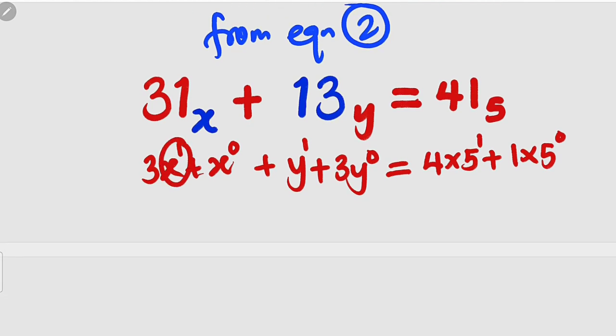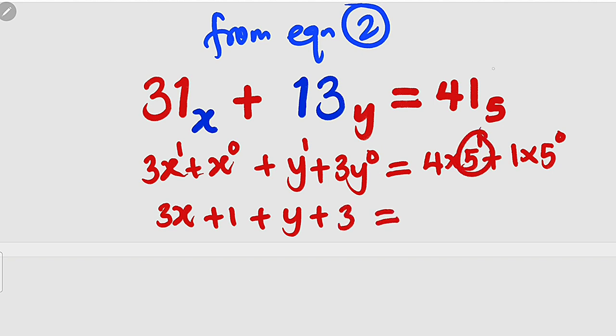This is x to the power of 1 which is x times 3 is 3x. Then x to the power of 0 is 1 plus y to the power of 1 is y plus y to the power of 0 is 1 times 3 is 3 equals 5 to the power of 1 is 5 times 4 is 20 plus 5 to the power of 0 is 1 times 1 is 1.